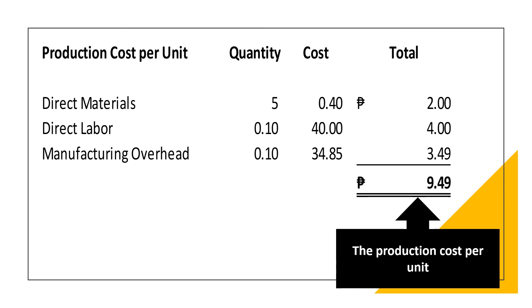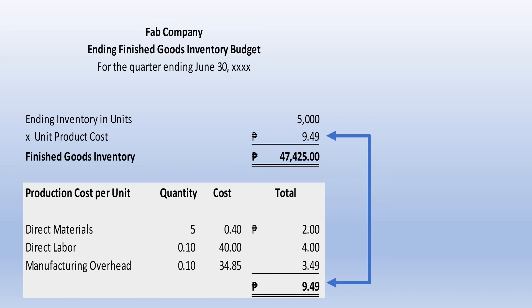That is the production cost per unit — each fabric conditioner costs 9 pesos and 49 centavos. Now the ending finished goods inventory units will be multiplied by the unit product cost, so the ending finished goods inventory amounts to 37,425 pesos.